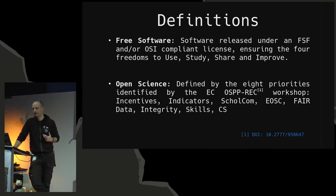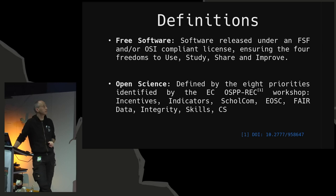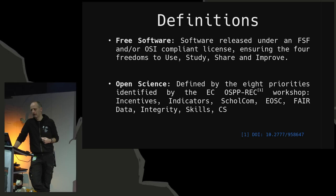For everyone who has been working in science, it's pretty clear that those four core freedoms are very well aligned with what we're trying to do in science. We're trying to build upon the work of others, advance humanity, and increase our overall knowledge. So what we're doing in science is exactly exercising those four freedoms — just not necessarily in a digital or code-based manner.